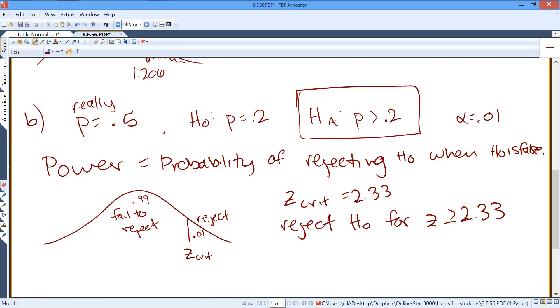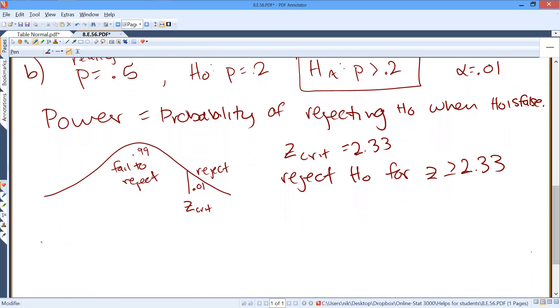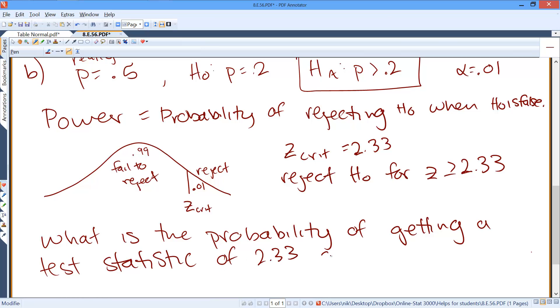So that's when we reject the null hypothesis. So basically now what's the probability we reject the null hypothesis? So we're looking for what is the probability of getting a test statistic of 2.33 or greater for our data?